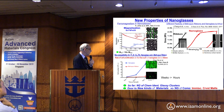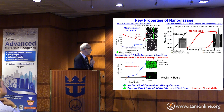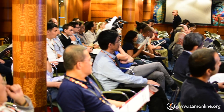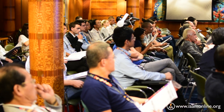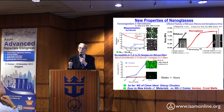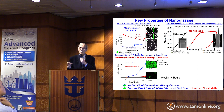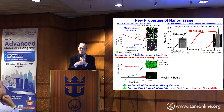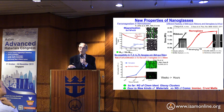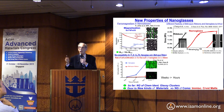A biologically very attractive feature is the enhanced biocompatibility. Cells grow about a factor of one hundred times faster on these nanoglasses than on a chemically identical melt-spun ribbon. When we coat implants with nanoglasses, they grow in a factor of one hundred times faster — meaning instead of a month, you can achieve integration within a day.